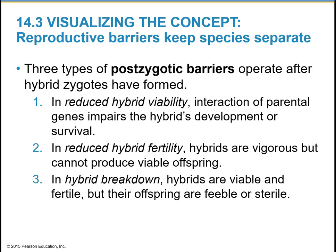There are three types of post-zygotic barriers that operate after hybrid zygotes have formed — so after mating has occurred and an offspring is on the way. First, reduced hybrid viability: the interaction of parental genes will impair the hybrid's development or survival, so the hybrid will be weaker and may not survive as long. Second, reduced hybrid fertility: the hybrids are strong, but they cannot produce viable offspring. Third, hybrid breakdown: the hybrids are viable and fertile, but their offspring are feeble or sterile.